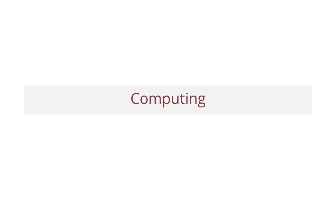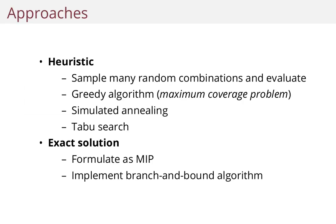So we have a function — we have a way to evaluate a party — and now we want to find the best party. There are many approaches to this problem. Some heuristics might be to sample random combinations and just evaluate them and keep the best one. This doesn't have any guarantee at all. It's a good way to start because you get an idea of the problem and which parties are good and which are bad. But it's not really how you want to solve it in practice.